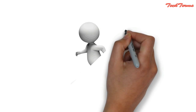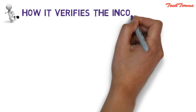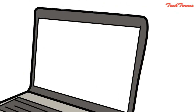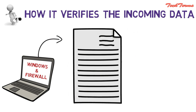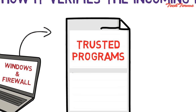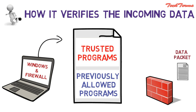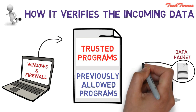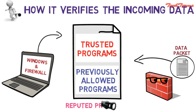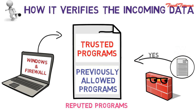The first and foremost limitation of firewall is how it verifies incoming data. Our computer's operating system and firewall have a list of trusted programs and previously allowed programs. When a data packet arrives, the firewall checks whether the incoming data packet belongs to an application in the list of reputed programs. If it does, the firewall allows the data packet to pass to the computer.